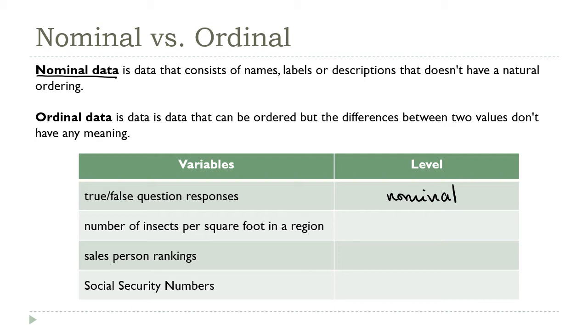Now if we sort the number of insects per foot, I do get some information from the result. Knowing that 100 per square foot comes before or is greater than 80 per square foot tells me that the former plot is in a sense more densely populated than the first one.